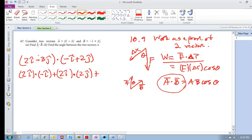2I dot minus I, plus 2I dot 2J, plus minus 3J dot minus I, and then finally, plus minus 3J dot 2J. So that's the basic idea.